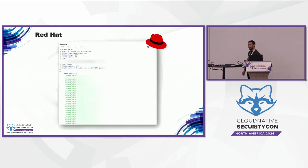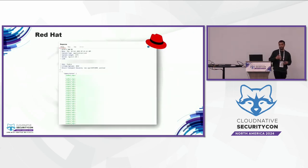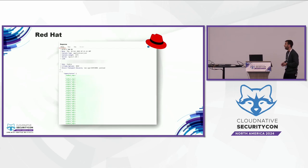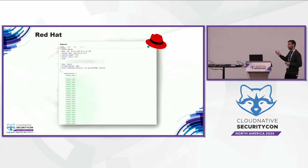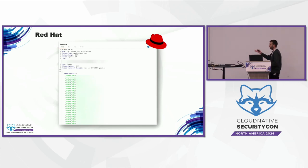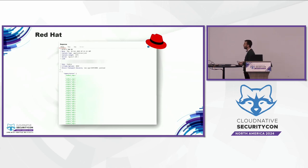Another example was found on a personal GitHub repository of a Reddit employee — a token to a private container registry of Reddit that contained many container images used by Reddit. Again, we reported this and they rotated the token.